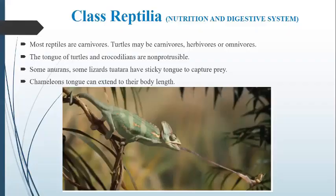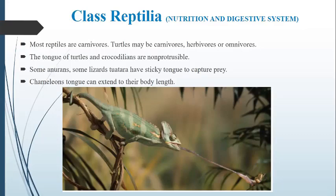Most reptiles are carnivores. Turtles may be carnivores, herbivores, or omnivores. Carnivores are animals which feed on other animals. Herbivores are organisms which feed only on plants, and omnivores have diversity in their food — they can feed on both plants and animals. So most reptiles are carnivores, and some turtles may be carnivores, some herbivores, and some omnivores.